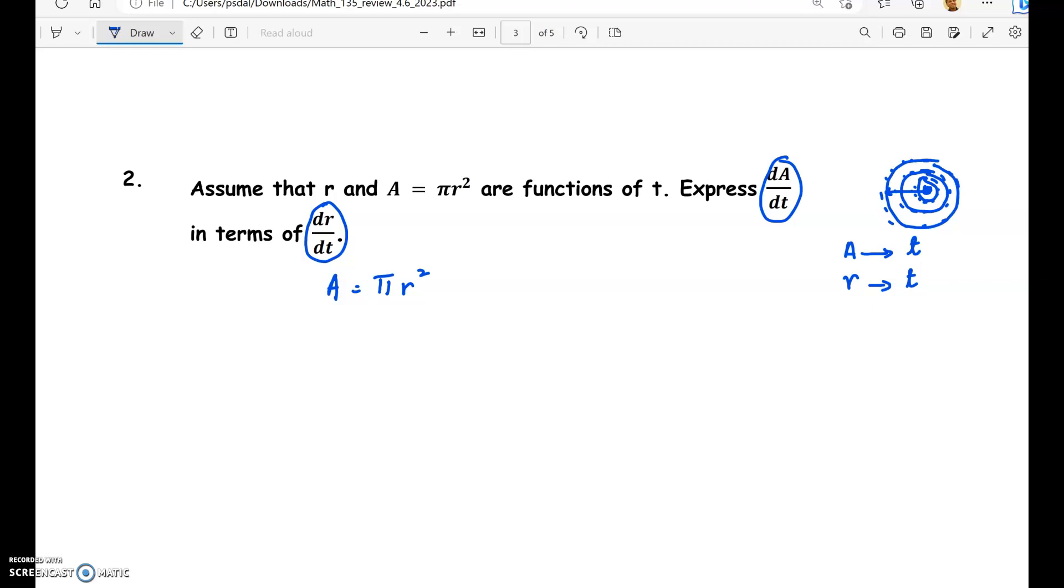So we are going to differentiate both sides with respect to a third variable which is t. So area is a variable, radius is a variable. Area and radius are functions of time and both can be differentiated with respect to a third variable which is time.